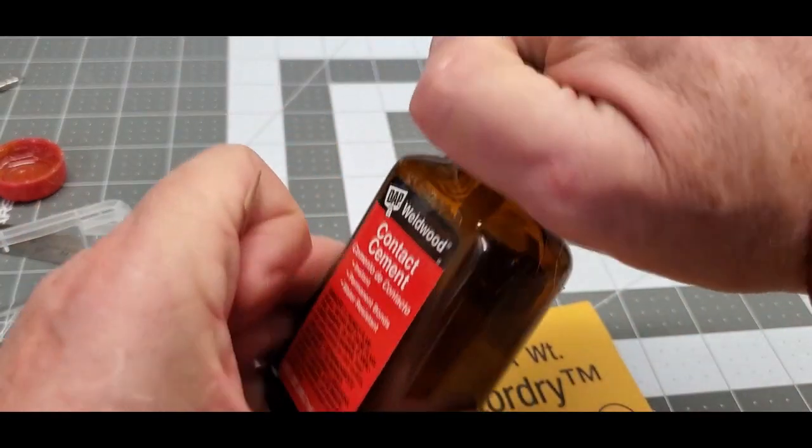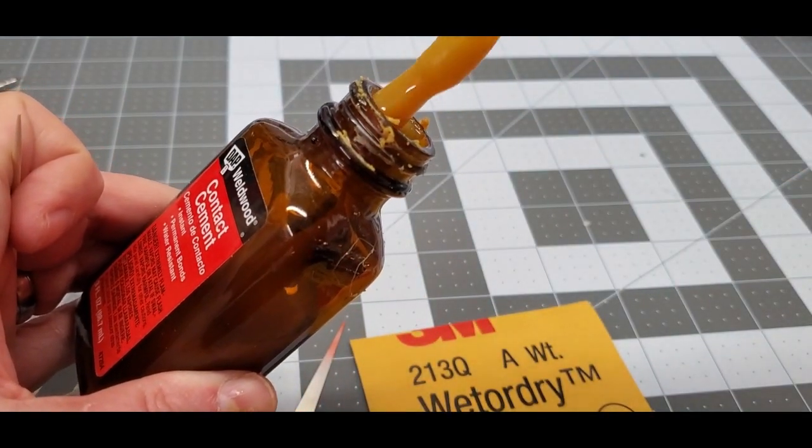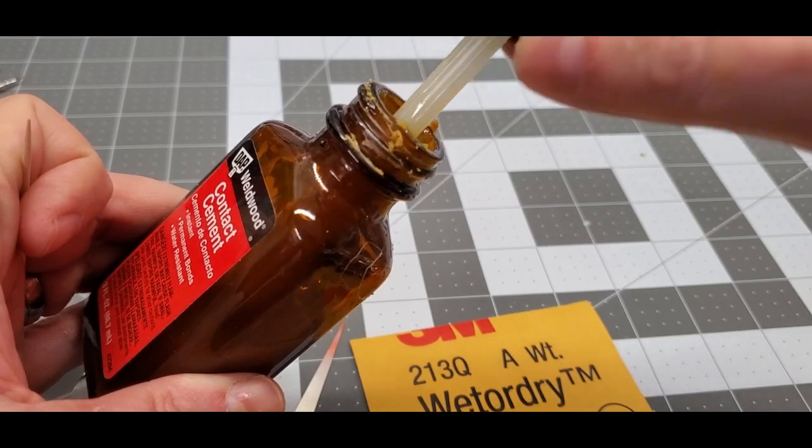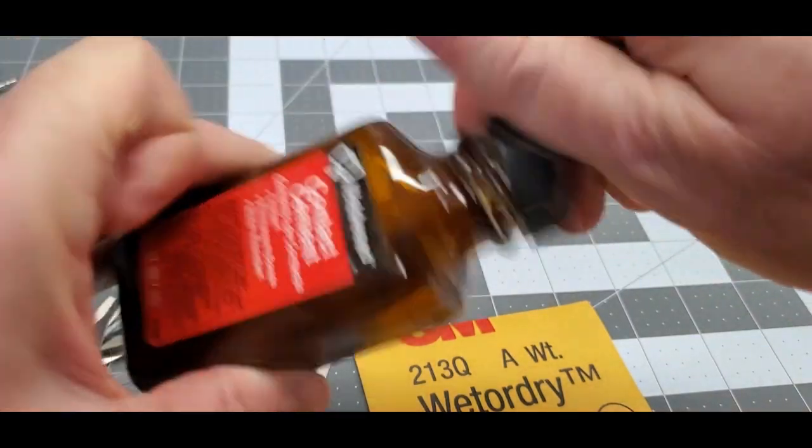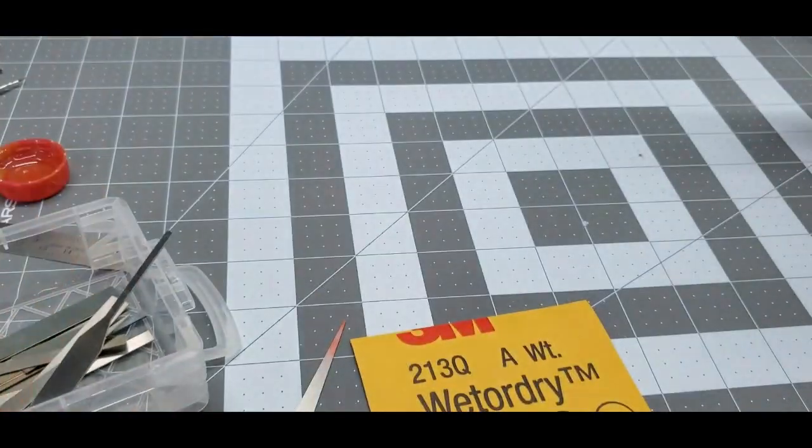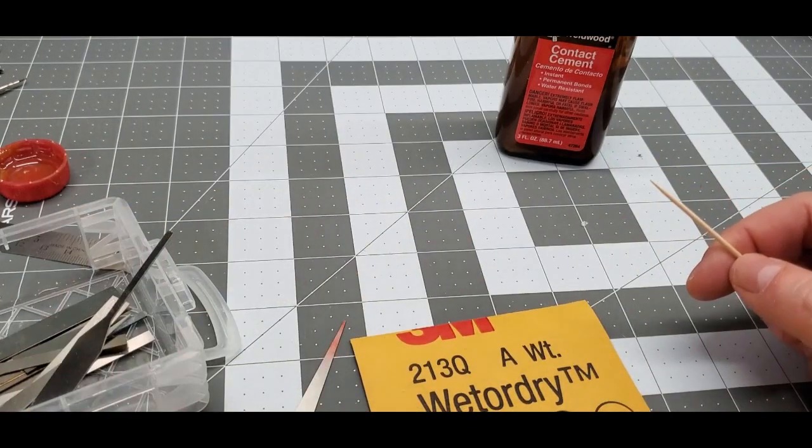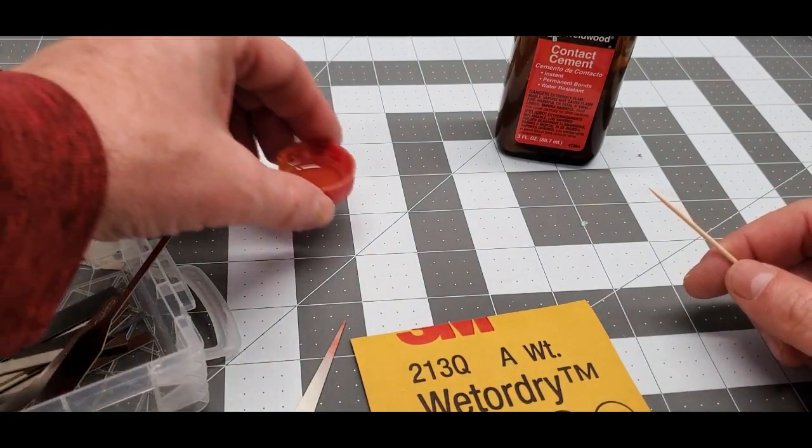The problem with it is when you first buy it out of the bottle, it's very sticky. It's runny. It's just very thick. Not ideal at all for modeling purposes. In fact, you would probably be scared to stick that on your model and you're right to do so because, you know, that's just too goopy.